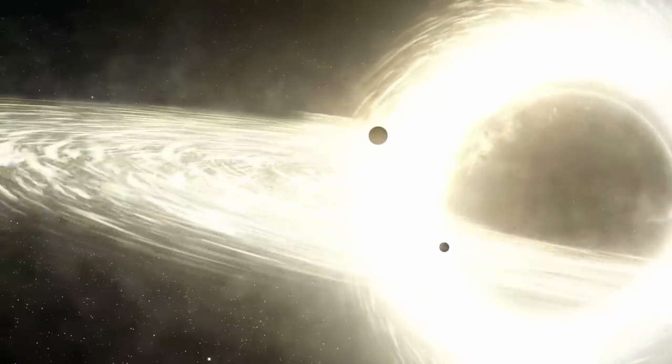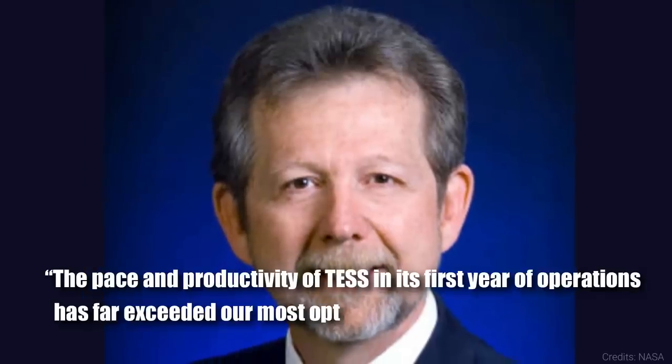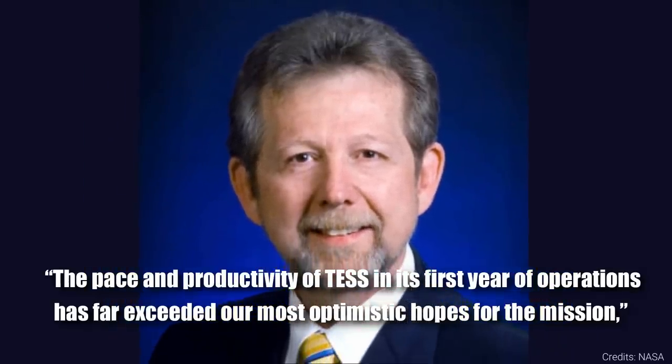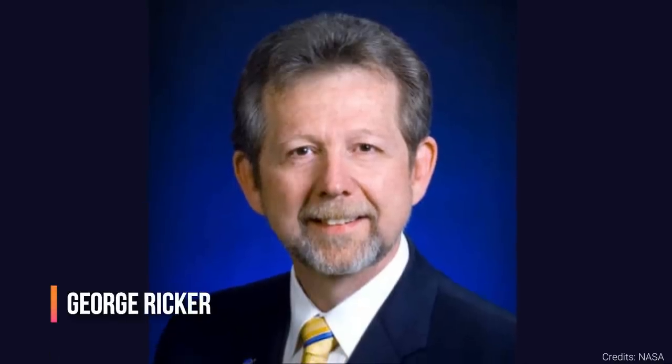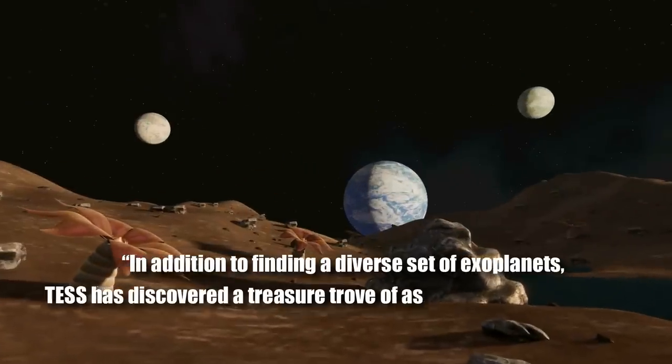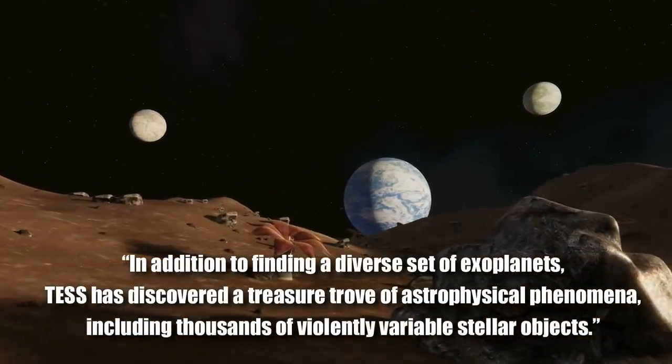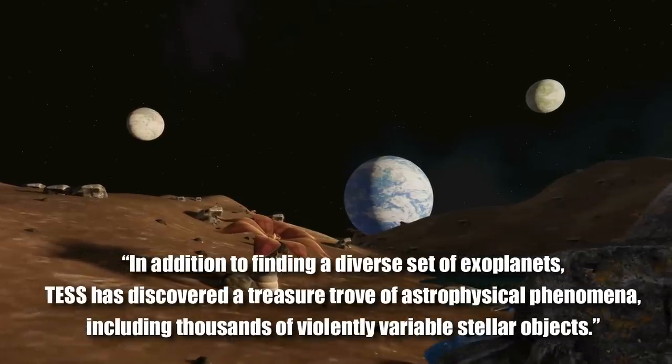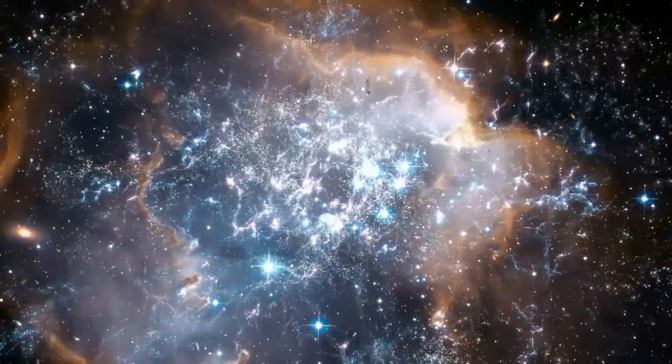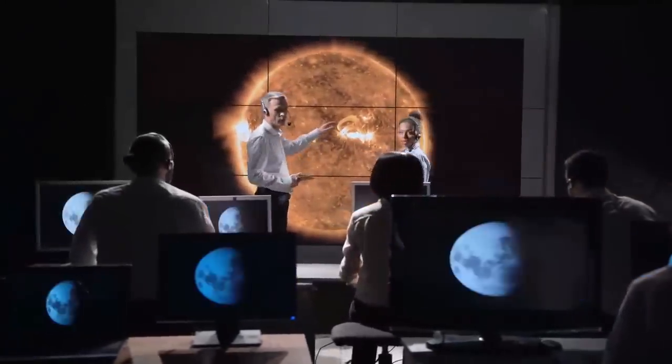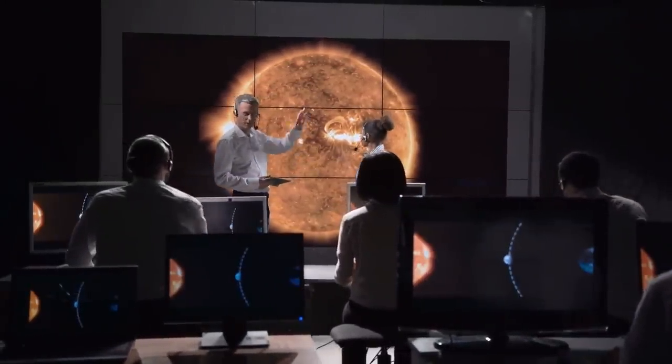The pace and productivity of TESS in its first year of operations has far exceeded our most optimistic hopes for the mission, said George Ricker, TESS's principal investigator at the Massachusetts Institute of Technology in Cambridge. In addition to finding a diverse set of exoplanets, TESS has discovered a treasure trove of astrophysical phenomena, including thousands of violently variable stellar objects. So imagine what TESS will be able to find in its full second year, or its third, or its fifth. Not to mention NASA and other space agencies are always looking to improve themselves and their technology. They may realize something with TESS that could lead them to being even more advanced with their next find.